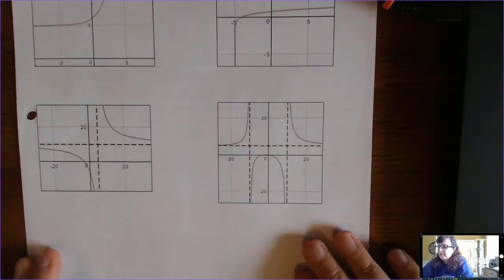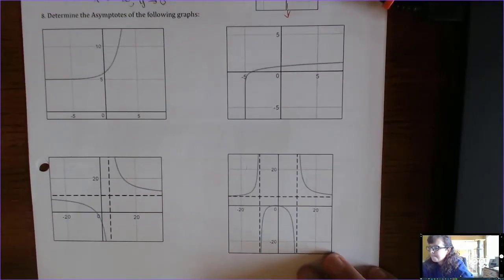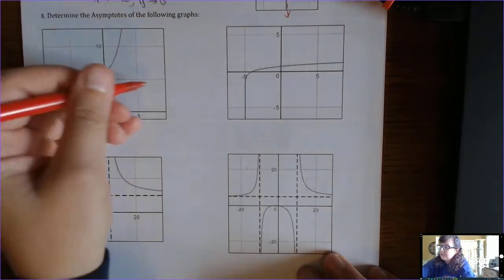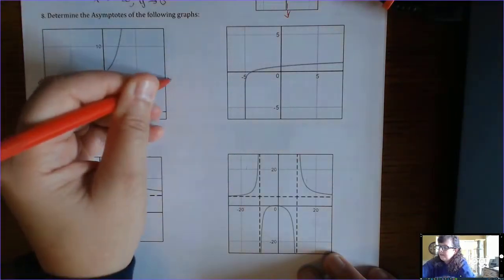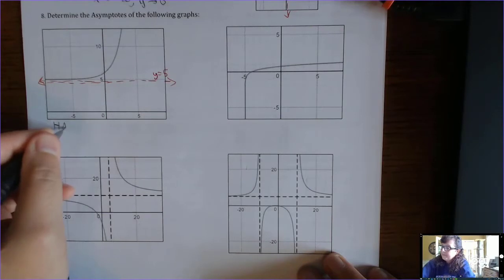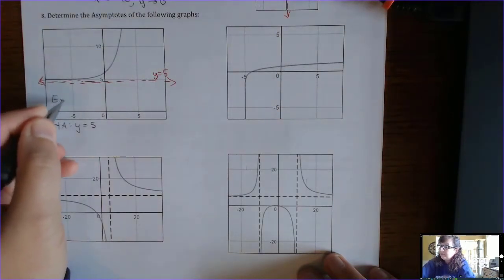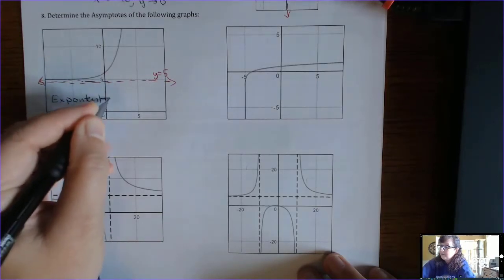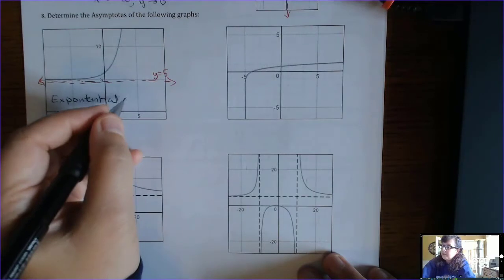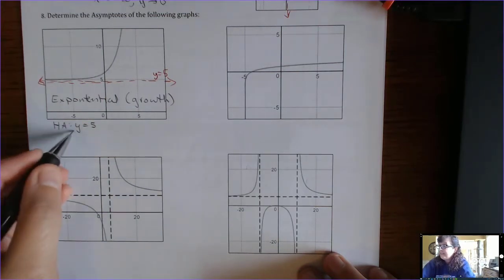You may want to pause the video and see if you can determine all the asymptotes for the following graphs. This first graph seems to be leveling off right here — that's a horizontal line of y equals 5. So it has a horizontal asymptote of y equals 5, but it does not have a vertical asymptote. This is an exponential function, and since it's increasing as we go to the right, this is exponential growth.